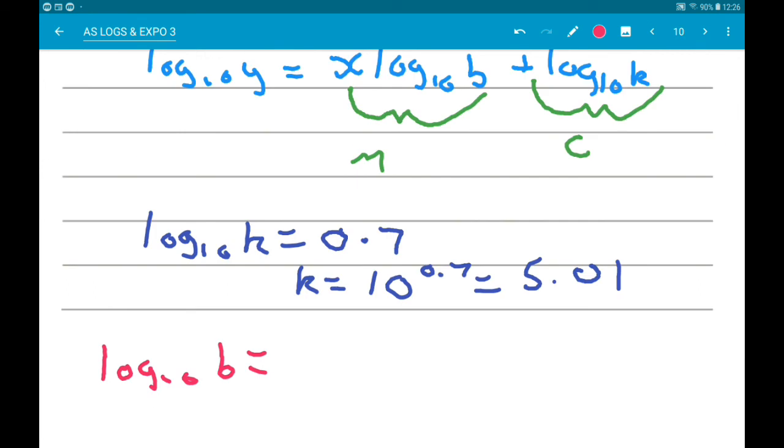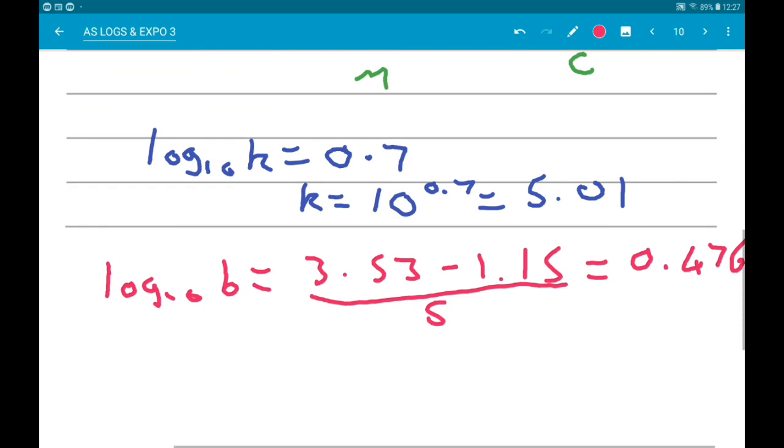Over 6 take 1 which is 5. Now that gives us 0.476, so that is telling us that b is 10 to 0.476 and that is going to give us 2.99.